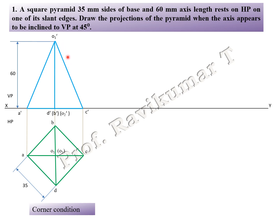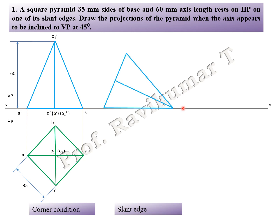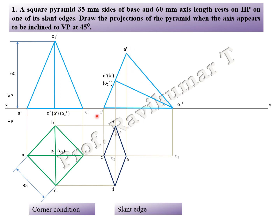For slant edge or slant triangle face — if you place a corner, that is slant edge because only two points are there. That is how we place a corner position for slant edge. Next, select this point, place it here, then rotate. Place the slant edge on the XY line — the slant edge should be placed on XY line. Then do the naming and draw projection line downward.